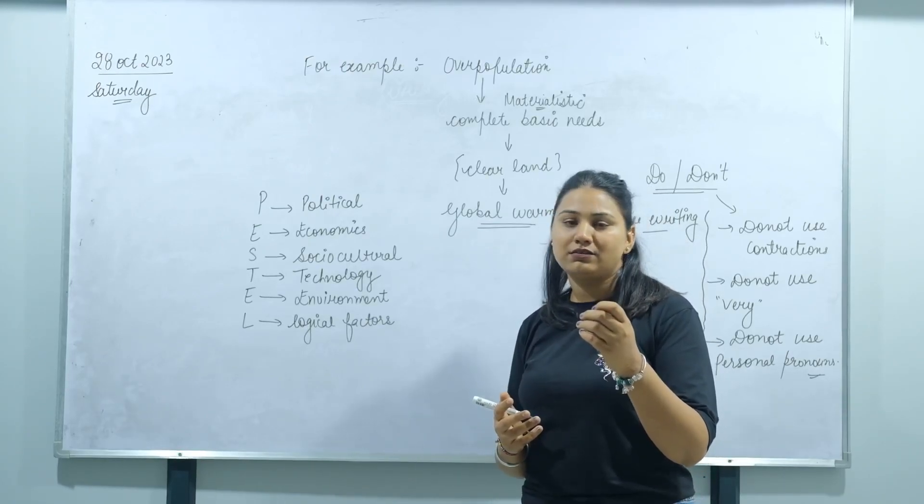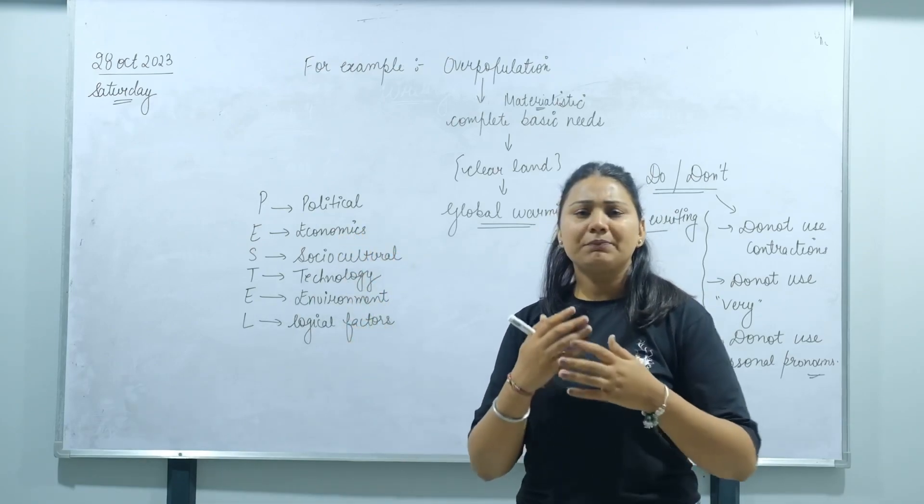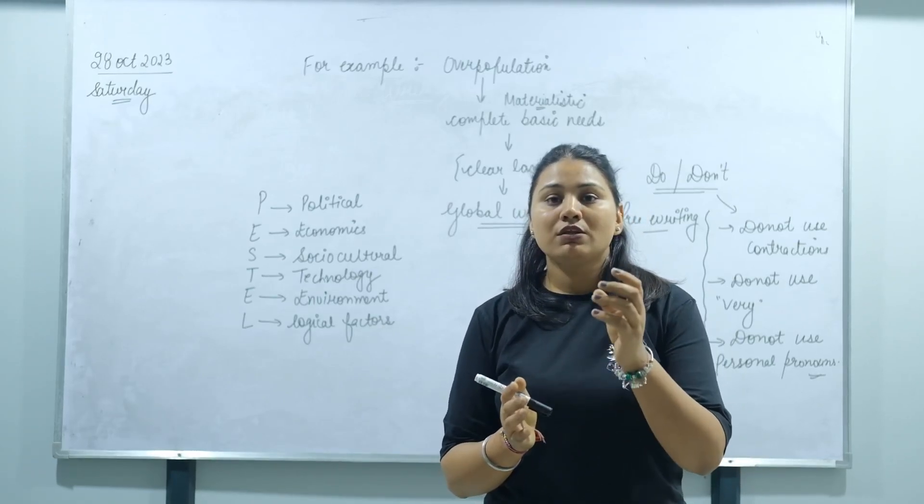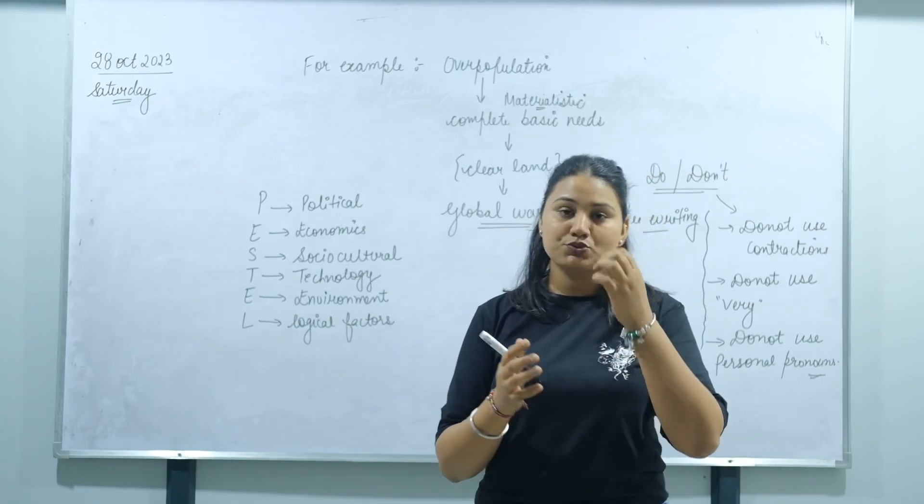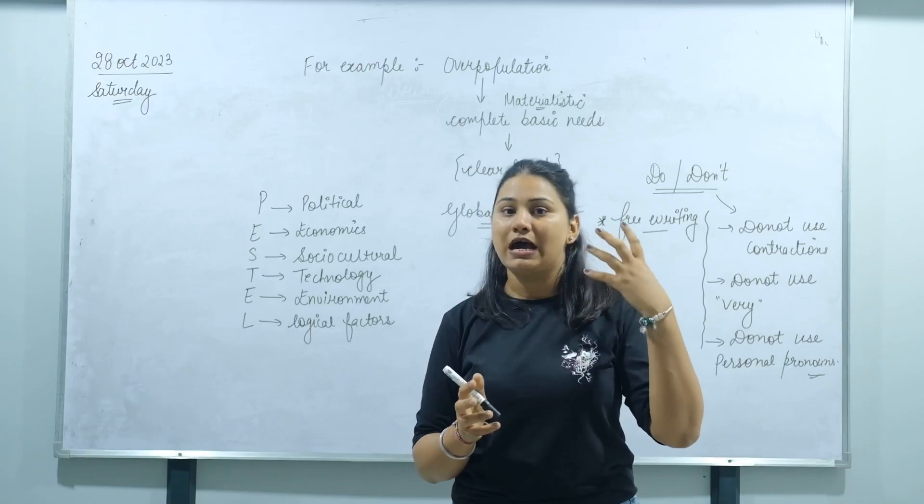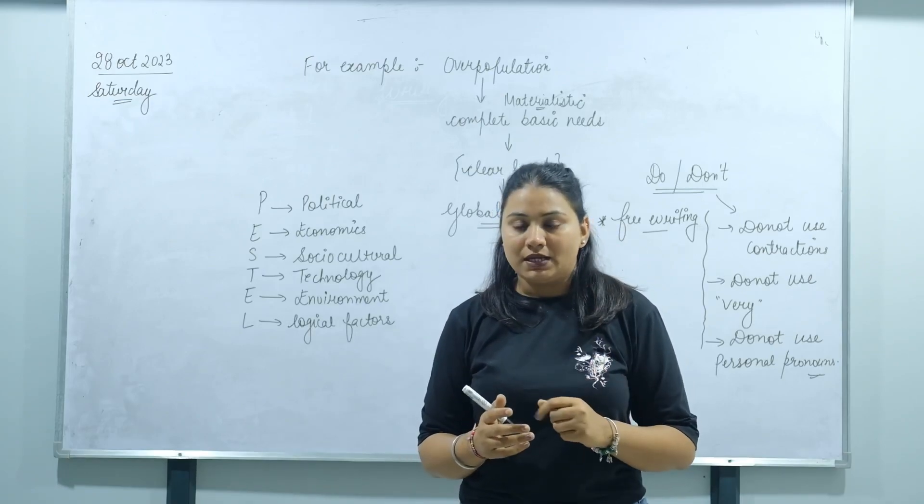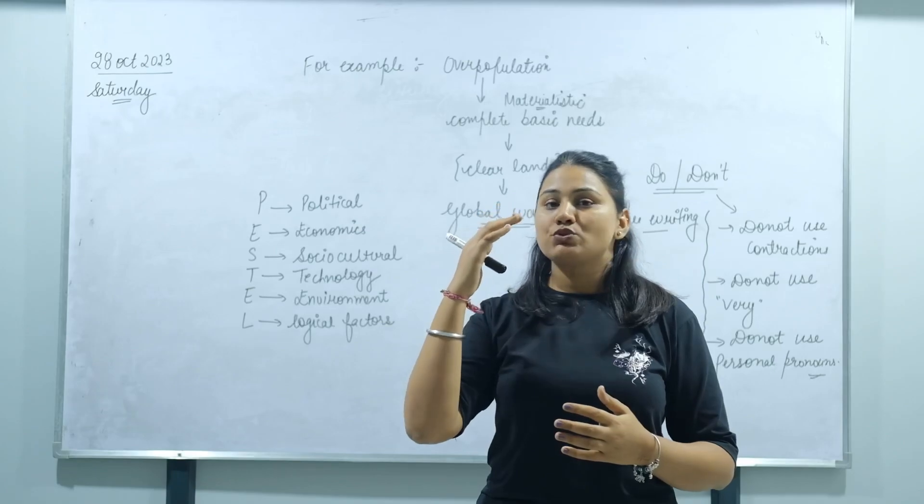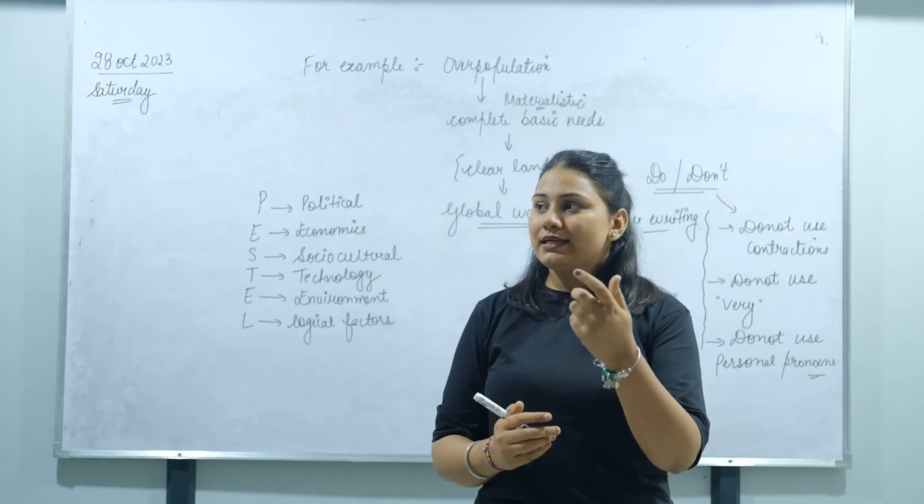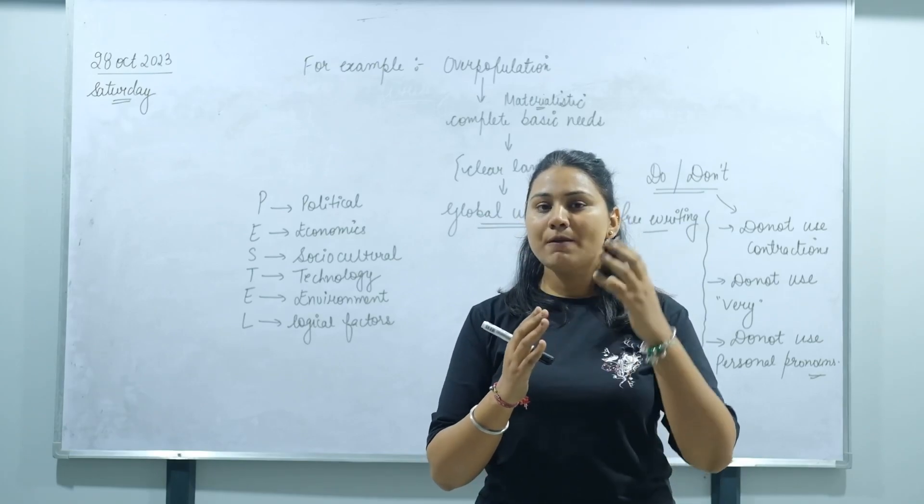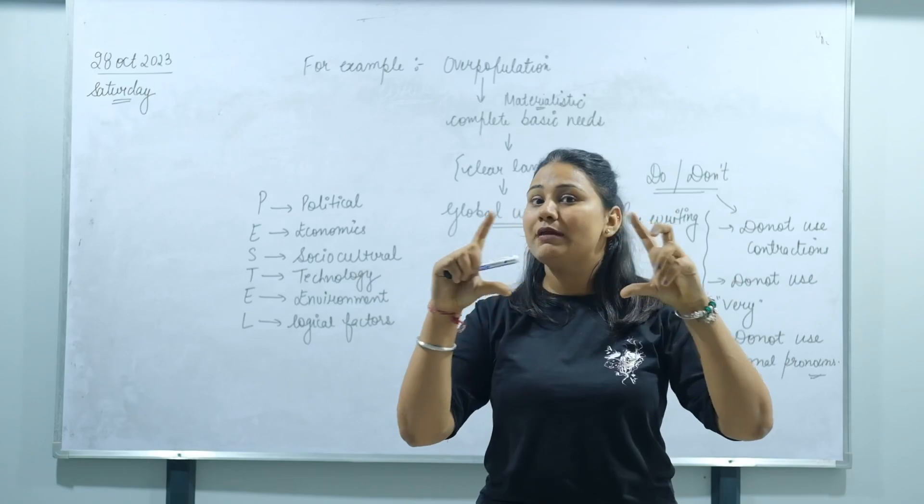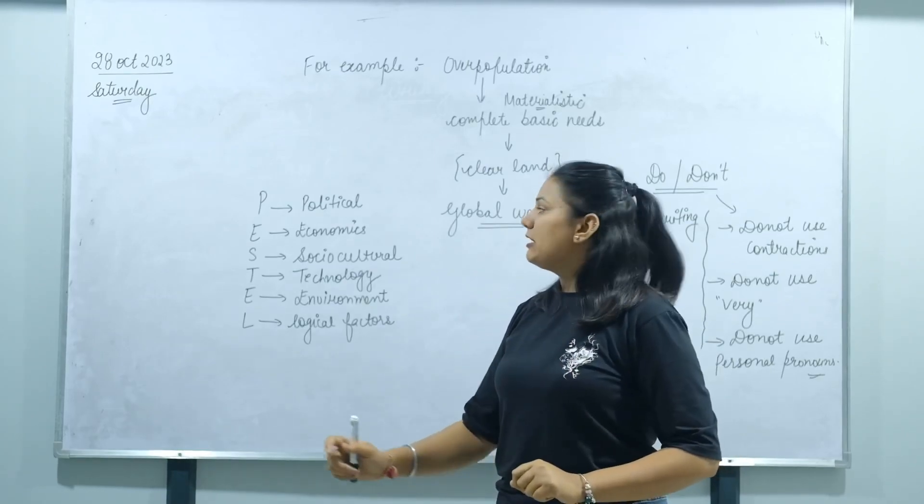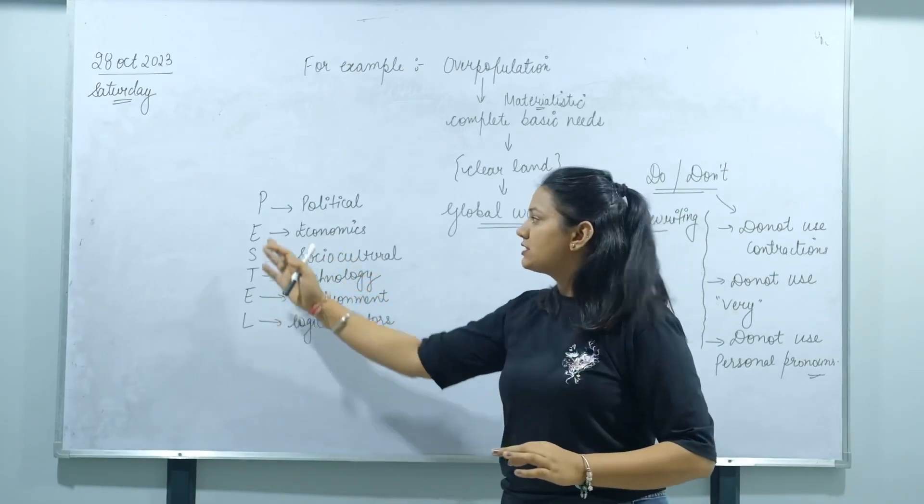Some students face problems with how to develop their ideas for writing task 2. You can use two methods: first is brainstorming, where you jot down the ideas which are in your mind, and the second is mind mapping, where you create a visual representation of what you are thinking about in your mind.